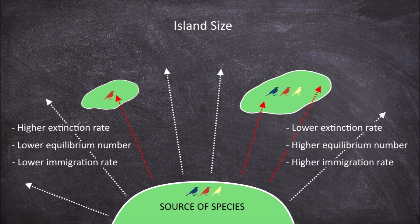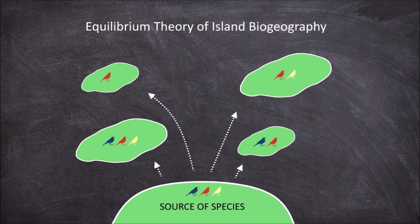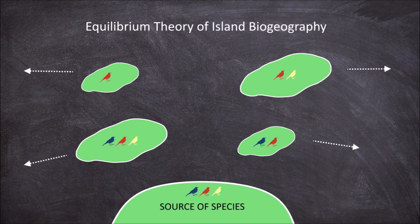In summary, the number of species on near, large islands is going to be higher than that on distant, small islands. Over time, on all islands, the counteracting forces of immigration and extinction create an equilibrium in the number of species on an island.